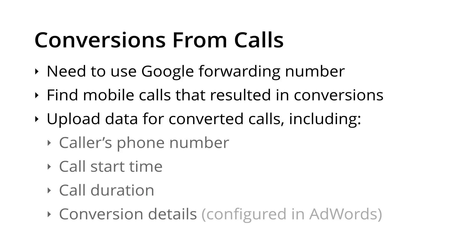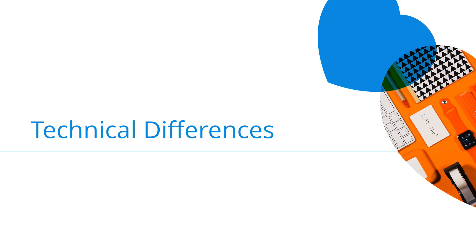We also have the option of uploading conversions that occurred during phone calls. There are a few requirements for this type of conversion, including that we need to be using a Google forwarding number. Once you've identified the calls that have converted, we need to upload details about those calls, including the caller's phone number, the time of the call, the call duration, and the conversion you'd like to track.